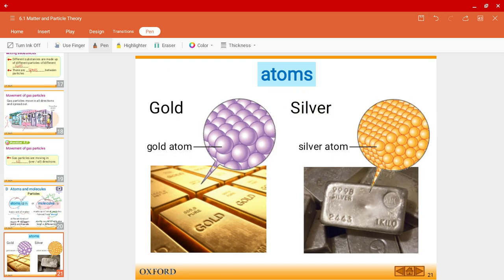So, for example, I have a gold metal, or if I have a silver metal, inside a gold metal, I will have gold atoms over here. So, you can see atoms over here. And over here, I have silver atoms.